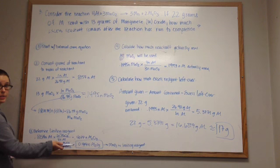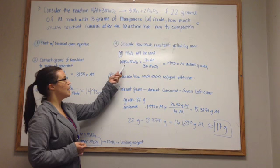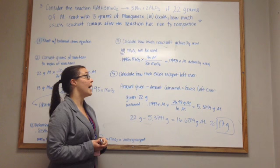Step 4, calculate how much reactant is actually used. MnO2 is the limiting reagent, all of that is going to be used. For Al, use the number of moles of MnO2 that actually react, use the mole ratios, and determine how much Al actually therefore reacts in terms of moles.